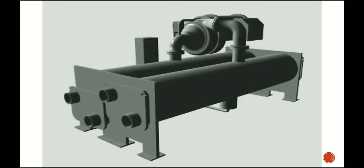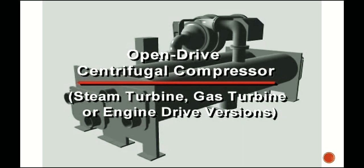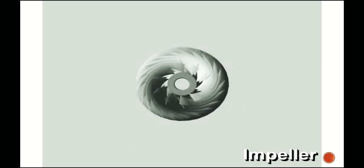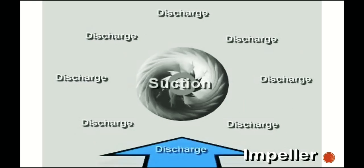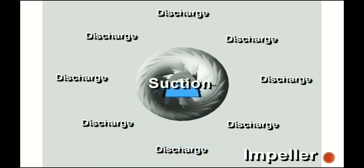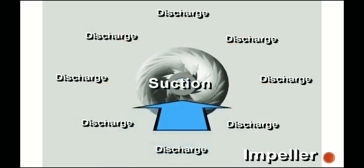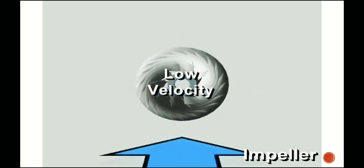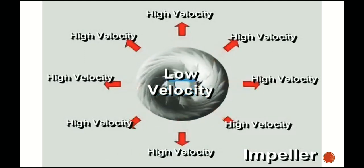Centrifugal compressors are usually driven by hermetic electric motors. However, open-drive centrifugal compressors are also available for applications using steam turbines, gas turbines, or engine drives. The impeller is a rotating circular disc with curved blades driven at high speed by the electric motor. As the impeller rotates, it moves refrigerant vapor from the suction opening at its center to the outer edge using centrifugal force. The vapor enters at relatively low velocity and leaves the outer edge at high velocity.